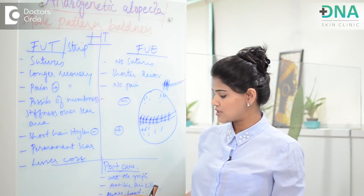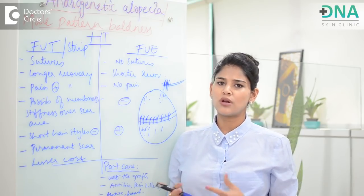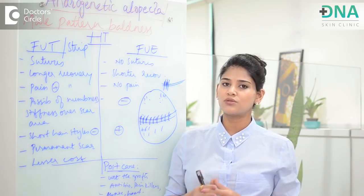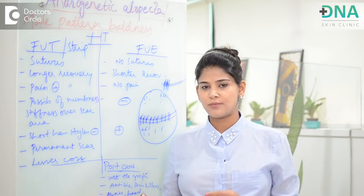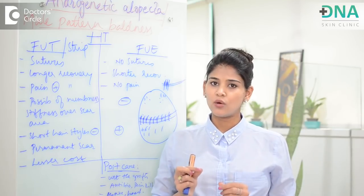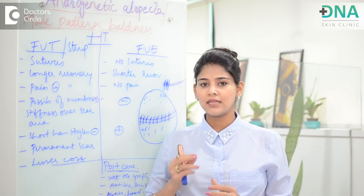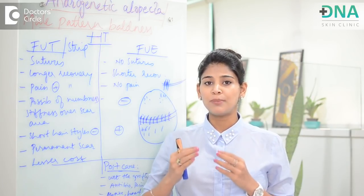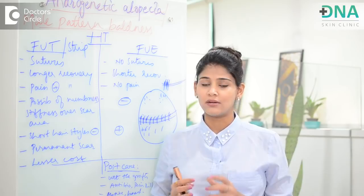Applying antibiotic ointment at regular intervals is necessary. You will also be advised to take minoxidil topically and finasteride orally; however, this is not mandatory — it is advised in order to strengthen the roots of your hair. Typically, the implanted hair will shed or fall out within two weeks, and then new hair starts growing. For you to see the complete result, it might take anywhere between six months to one year.